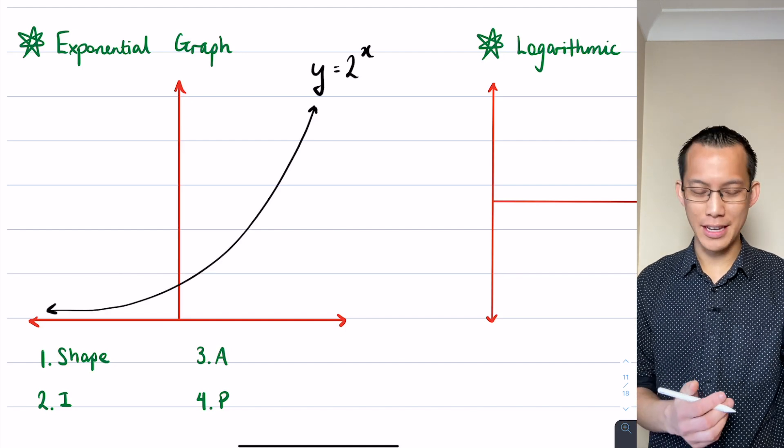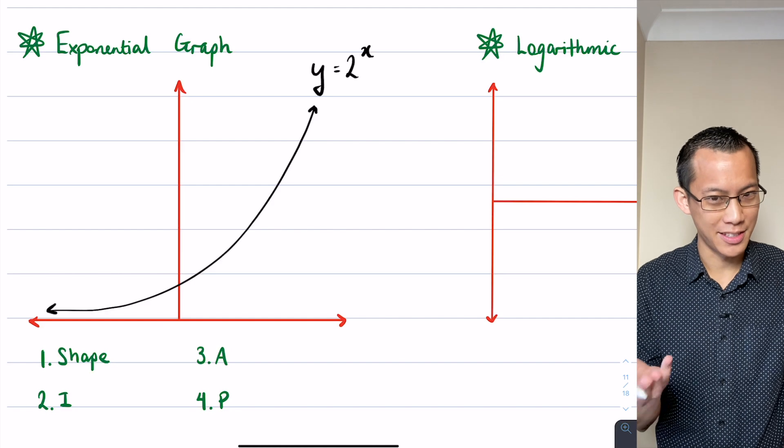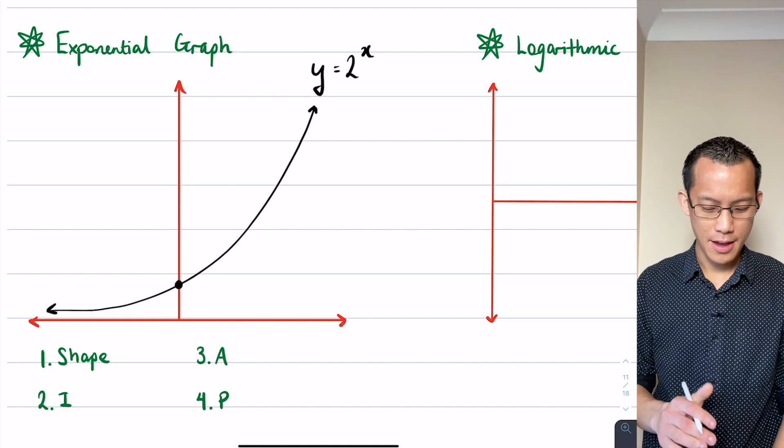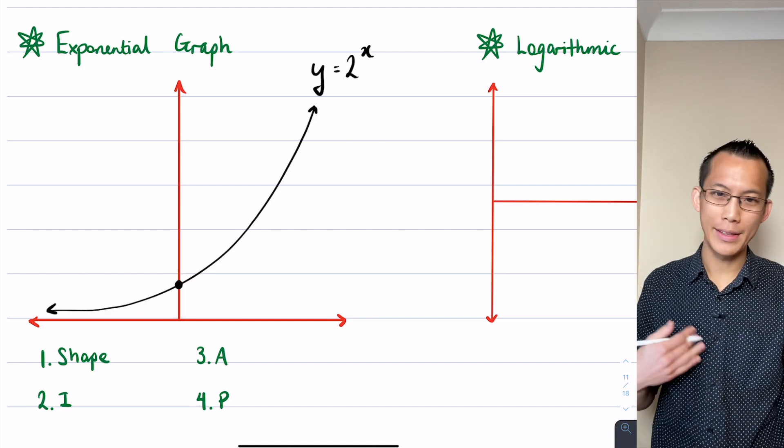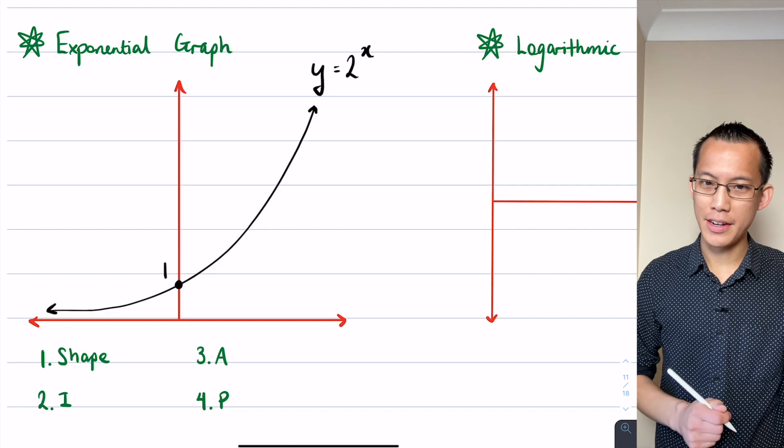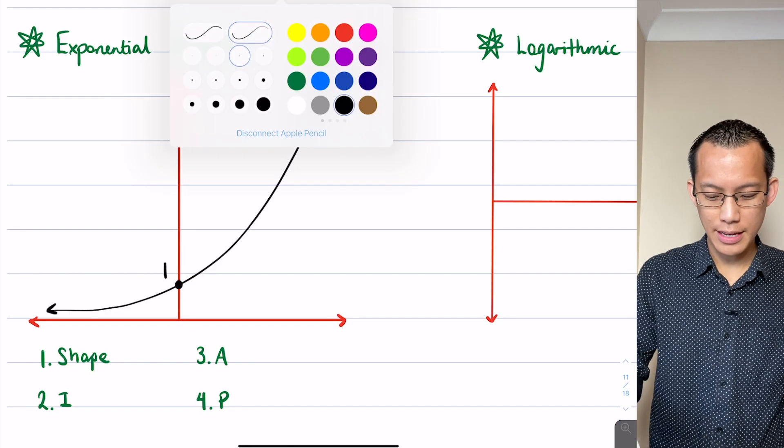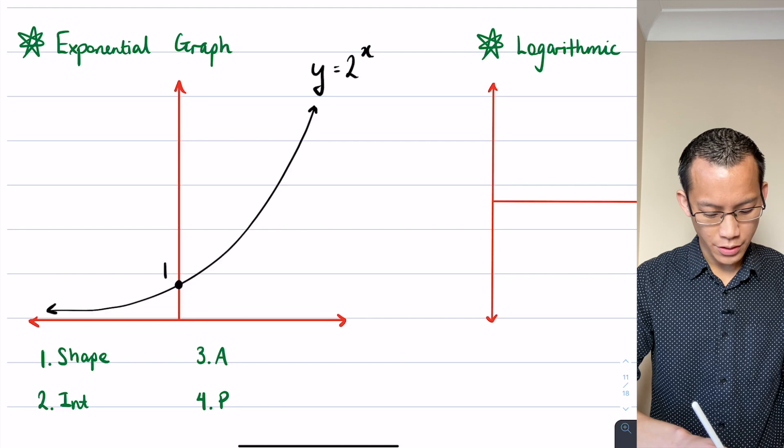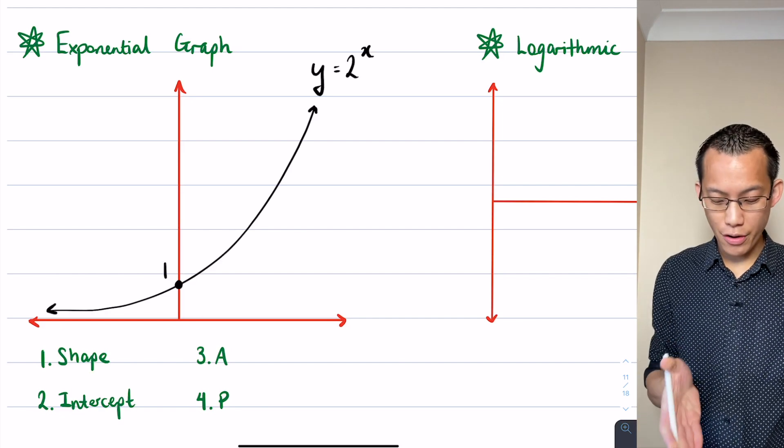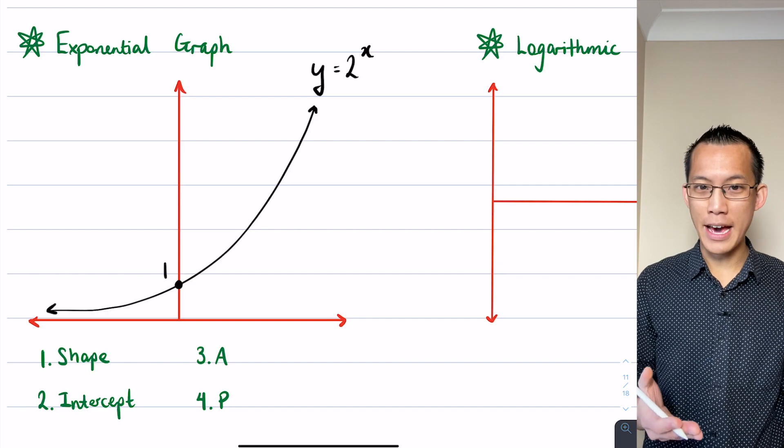The second thing is actually something that I signposted earlier - you can guess because it starts with an I. It's this one and only intercept that this particular graph has. This is a y-intercept so we let x equals zero, which is what we did earlier, and you'll find your y-intercept is one. In this case we don't actually have an x-intercept.